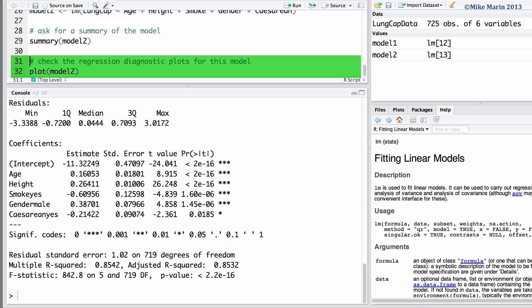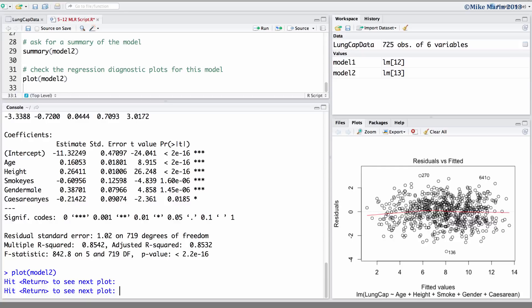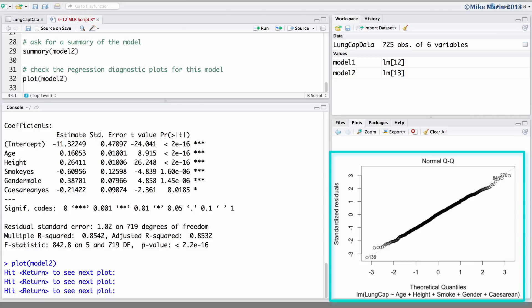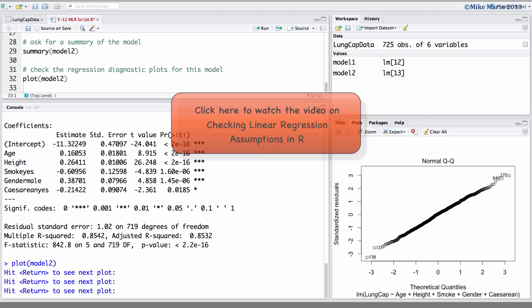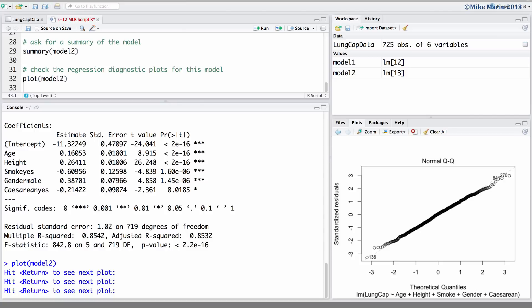We can check the model assumptions by examining plots of the residuals or errors. To do so, we can use the plot model command. Taking a look at these plots here, we can see the relationship between age, height, and lung capacity is approximately linear. The variation looks constant. Lung capacity given age and height is approximately normal. To learn more about producing and examining these residual plots, you can see my earlier video on examining model assumptions in linear regression.